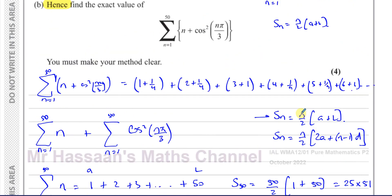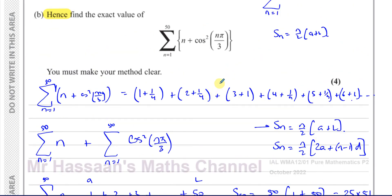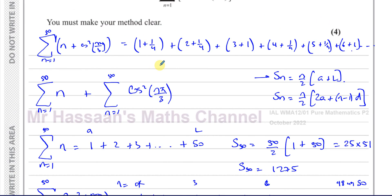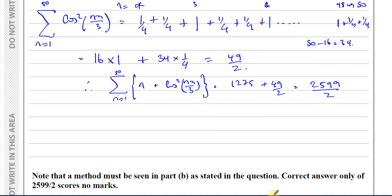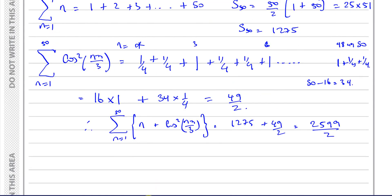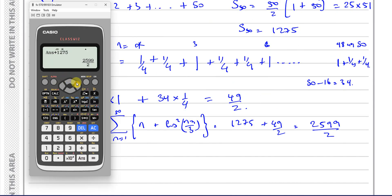We could also write it as 1,299.5 as a decimal, but it's fine to leave it as 2,599 over 2 since the question asks for an exact value.